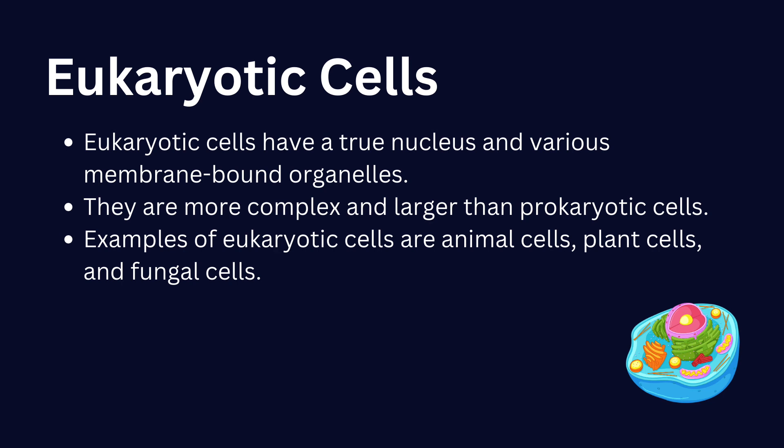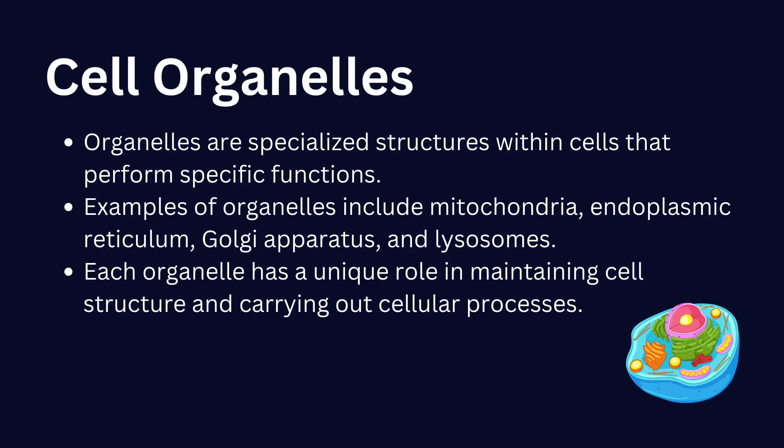On the other hand, eukaryotic cells have a true nucleus and various membrane-bound organelles. They are more complex and larger than prokaryotic cells. Examples of eukaryotic cells are animal cells, plant cells, and fungal cells.